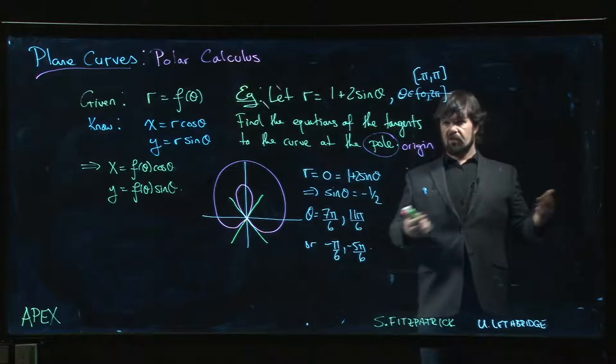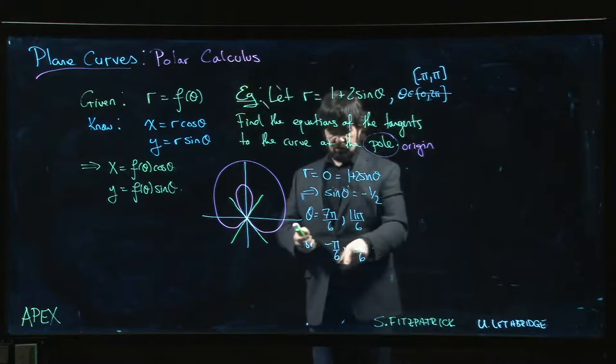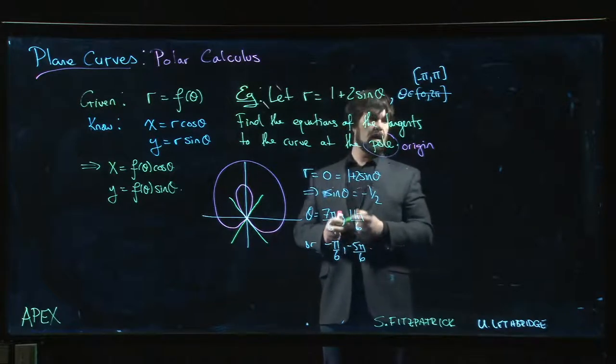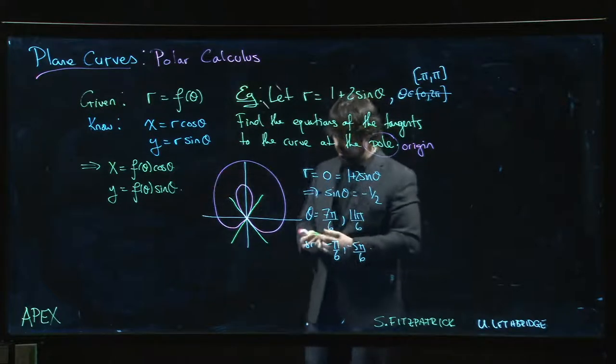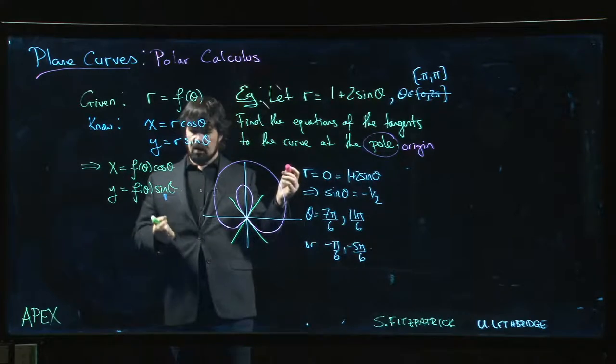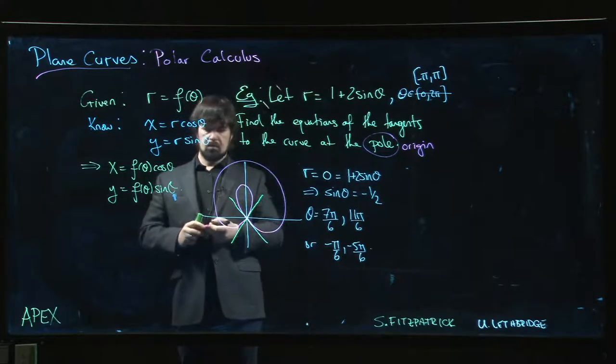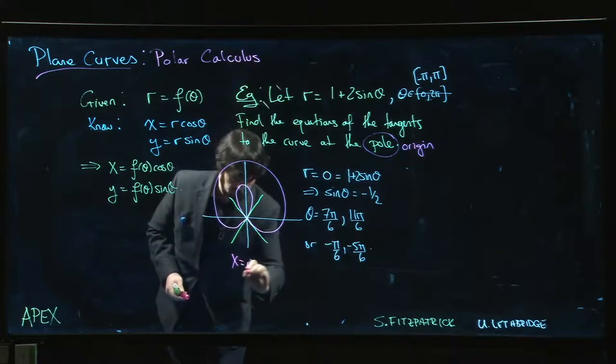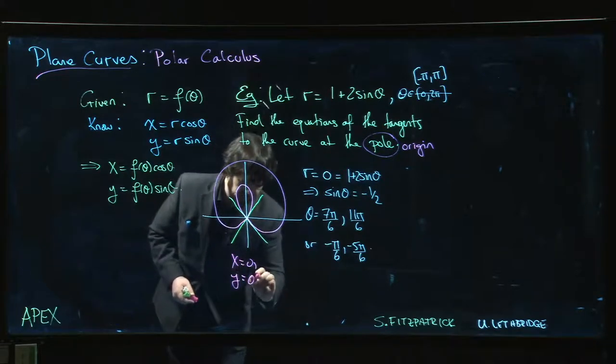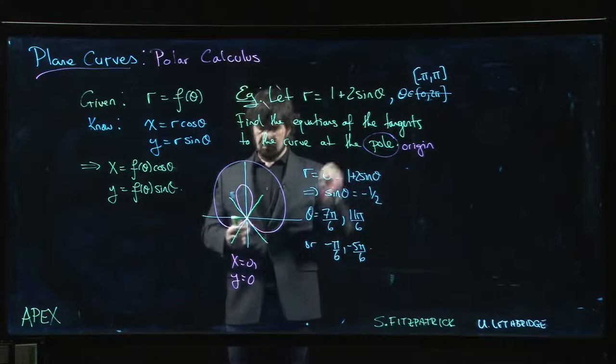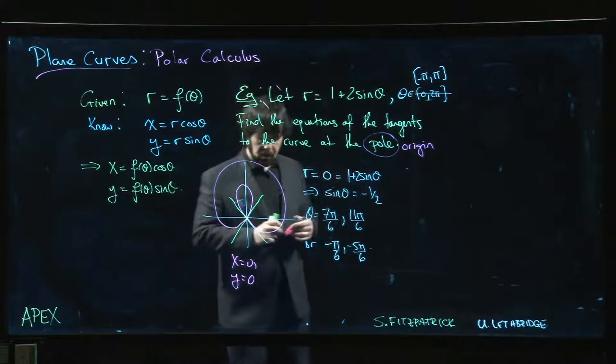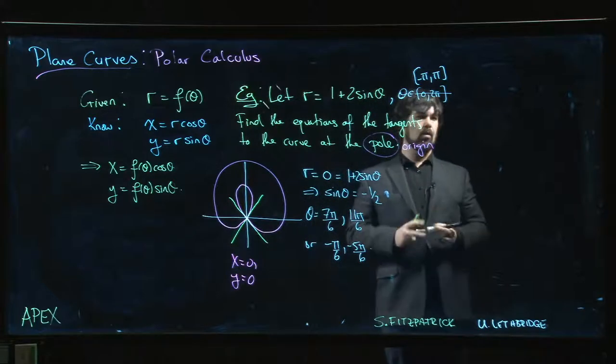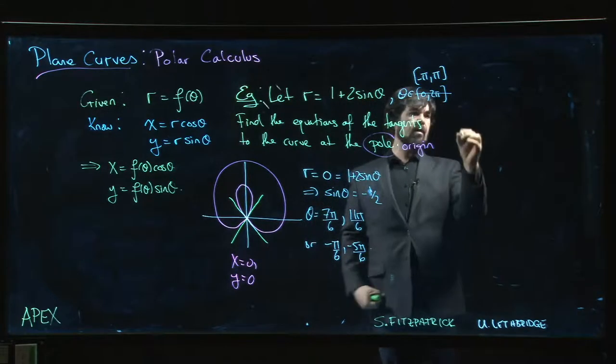Now we need to find the equation of the tangent lines at those two points. So we can say, as usual, we use these equations here. We don't have to worry about, you know, we know what x and y are going to be. We're looking at x equals zero, y equals zero, because we're at the pole. So that saves us a little bit of trouble. What we need is we need the derivative at the pole. So we come back and we say, like last time,